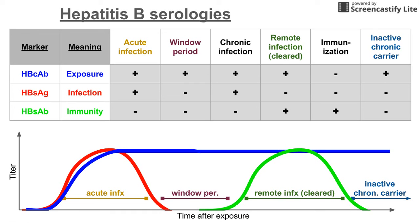The easiest way to understand what these markers mean is with the one-word description listed in the second column. The core antibody, HBcAb, indicates that a person has been exposed to hepatitis B. The surface antigen, HBsAg, indicates that a person has been infected with hepatitis B. And the surface antibody indicates that a person is immune to hepatitis B.